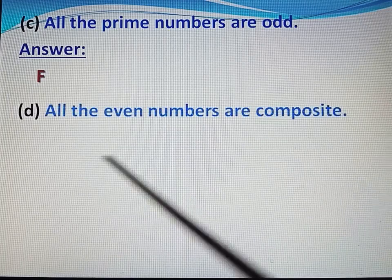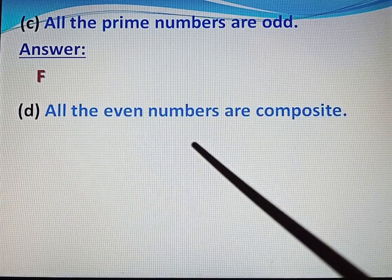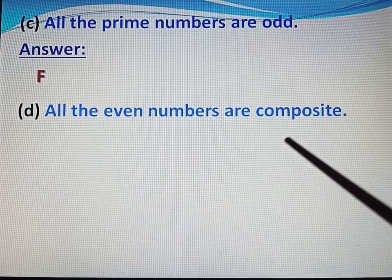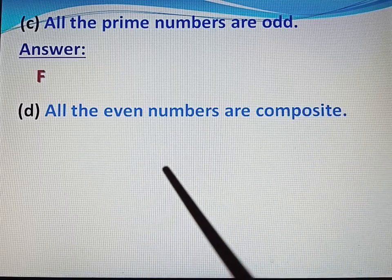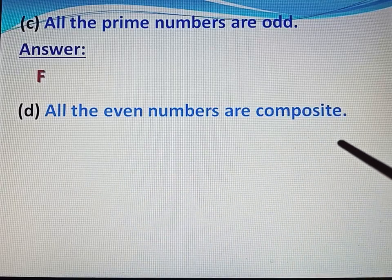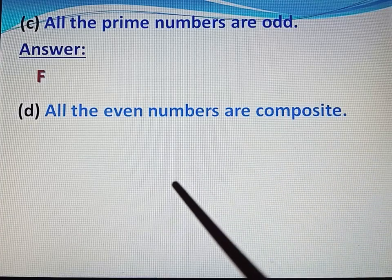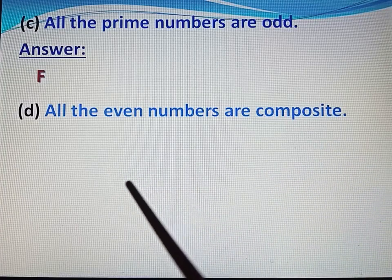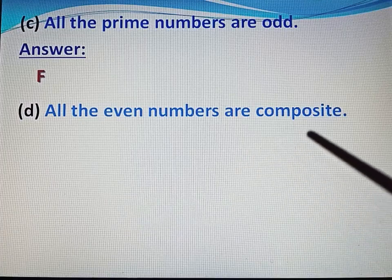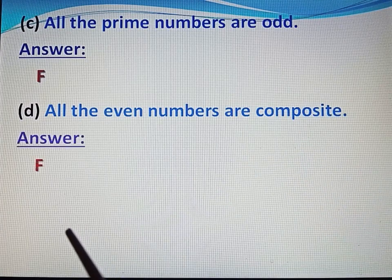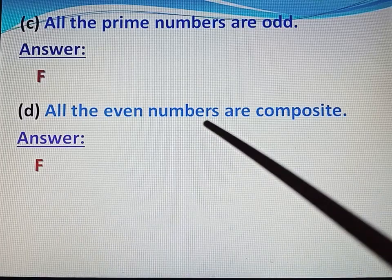Next, part D. All the even numbers are composite. No, all the even numbers are not composite. For example, 2 is an even number but 2 is not a composite number. So this statement is false. Write F.